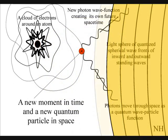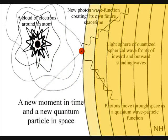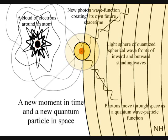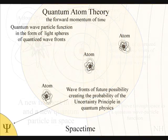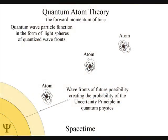When each wavefront comes in contact with the electrons on the surface of another atom, it will form a photon-electron coupling, creating a new moment in time and a new expanding light sphere of future probability.